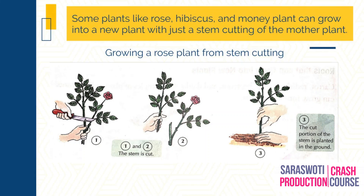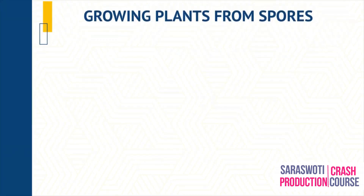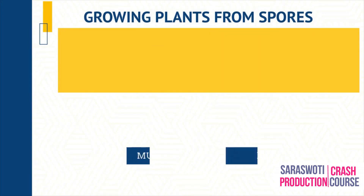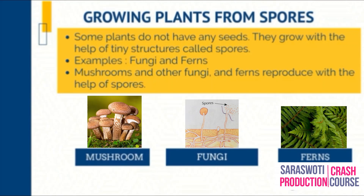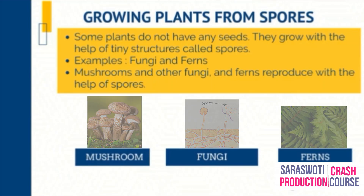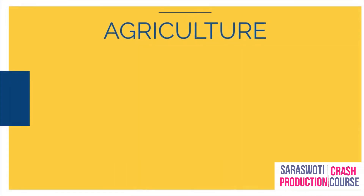Some plants like rose, hibiscus and money plant can grow into a new plant with just a stem cutting from the mother plant. Some plants do not have any seeds — they grow with the help of tiny structures called spores. Fungi and ferns are examples of such plants. Mushrooms and other fungi and ferns reproduce with the help of spores.